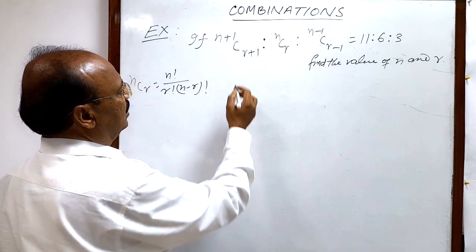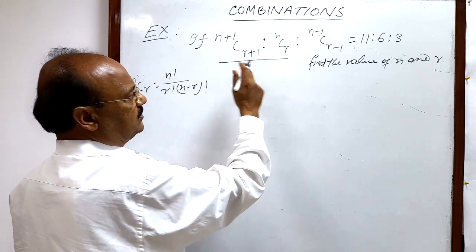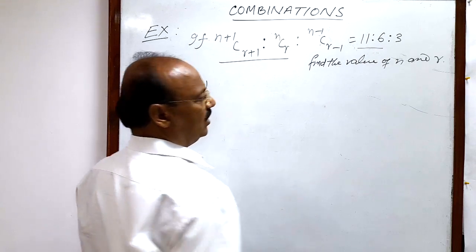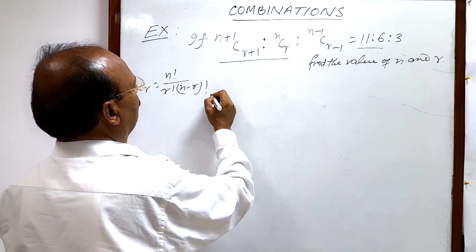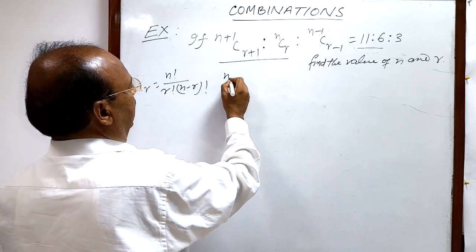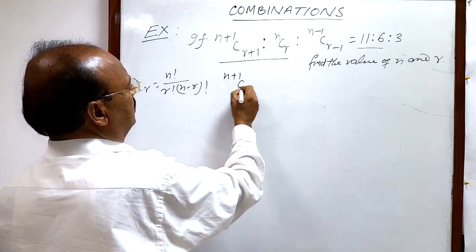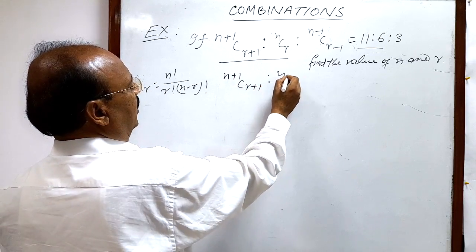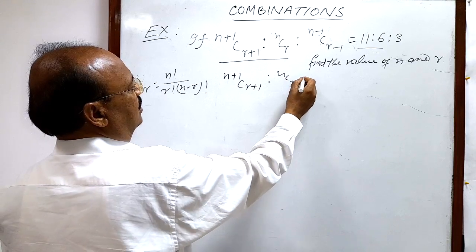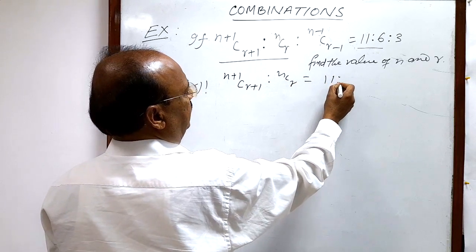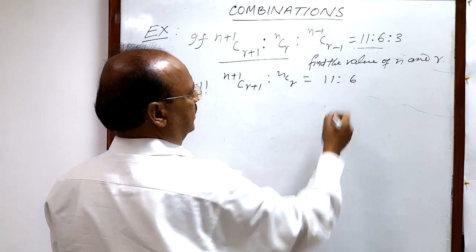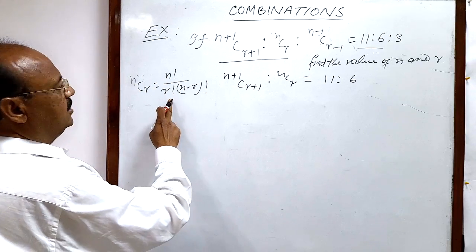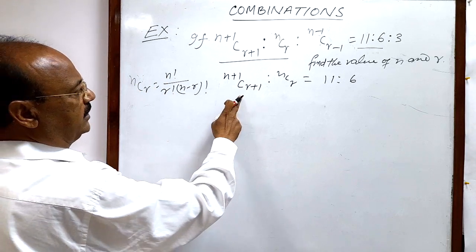First of all, let us take the left part and the right part separately. So (n+1)C(r+1) is to nCr is equal to 11 is to 6.